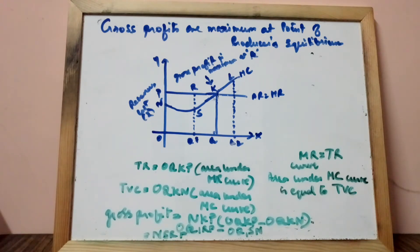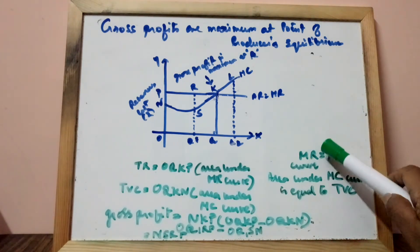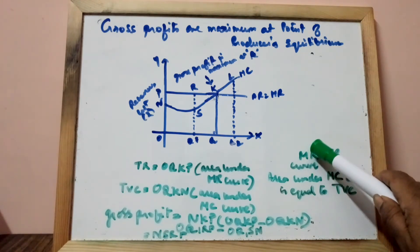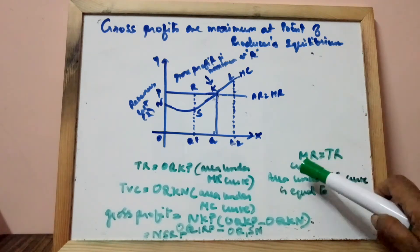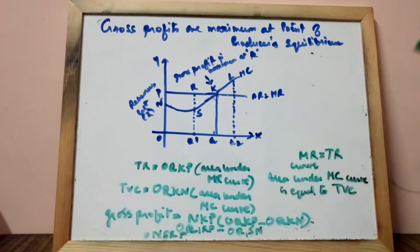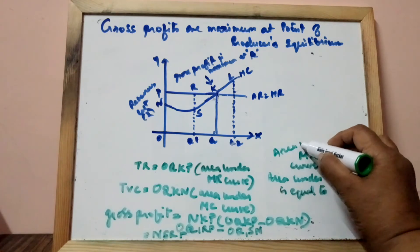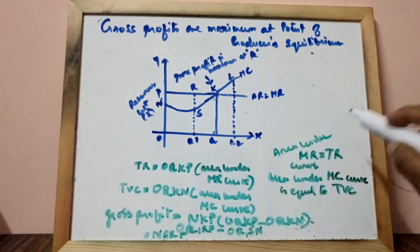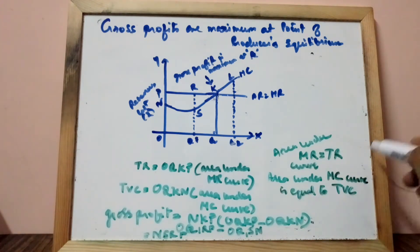We have already learned that the area under the MR curve is equal to TR. Here you find the area under the MR curve is equal to TR. The area under the MC curve is equal to TVC — this is what we learned in the last chapters.